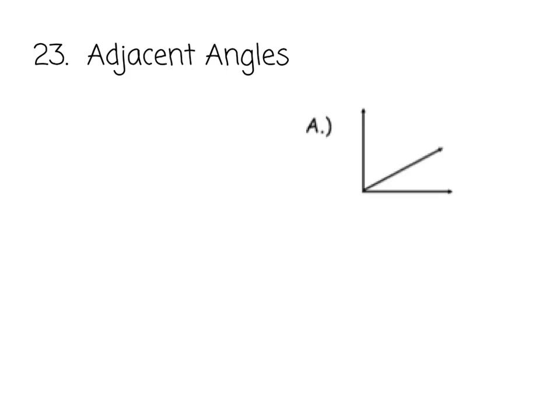Adjacent angles means that there are angles that share a ray. They have a common ray. So if I call this angle one and two, they share this ray right here, which makes them adjacent angles. Adjacent just means next to or consecutive.